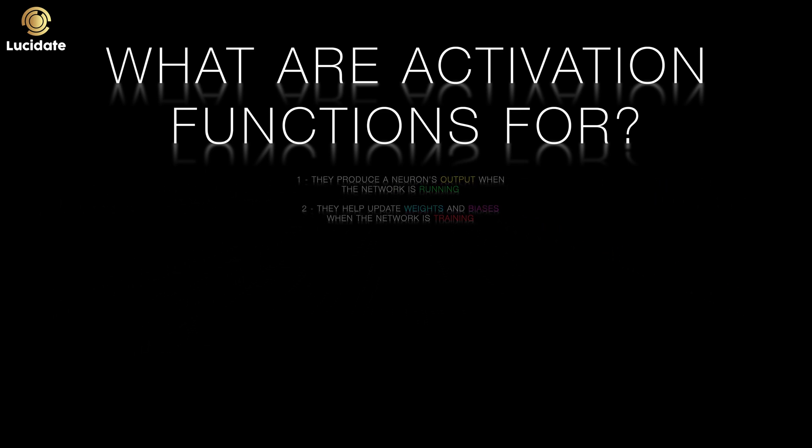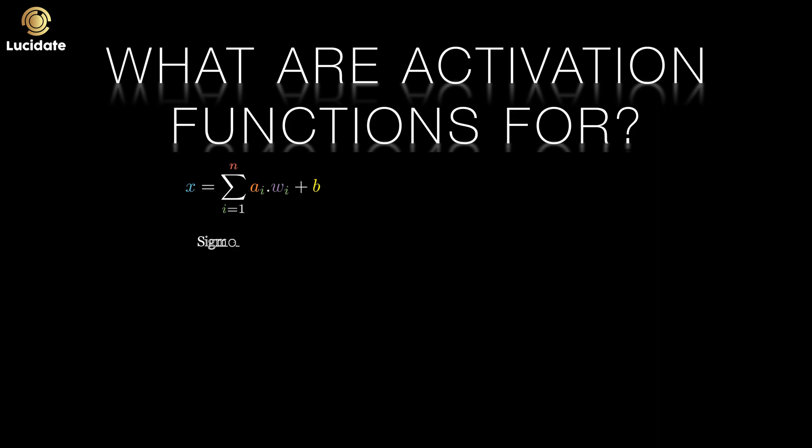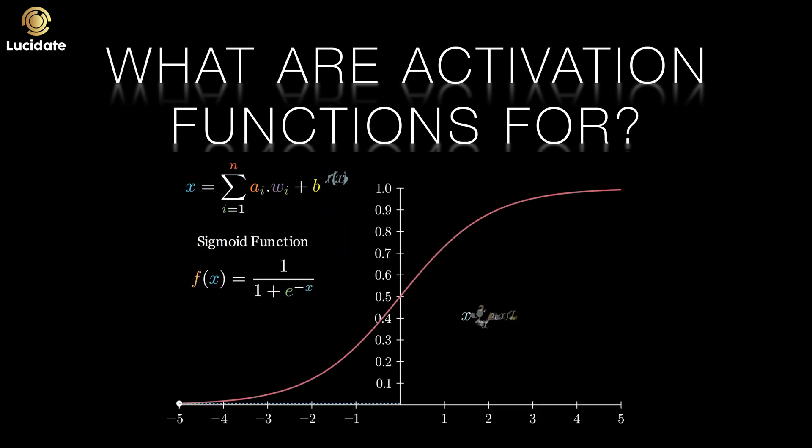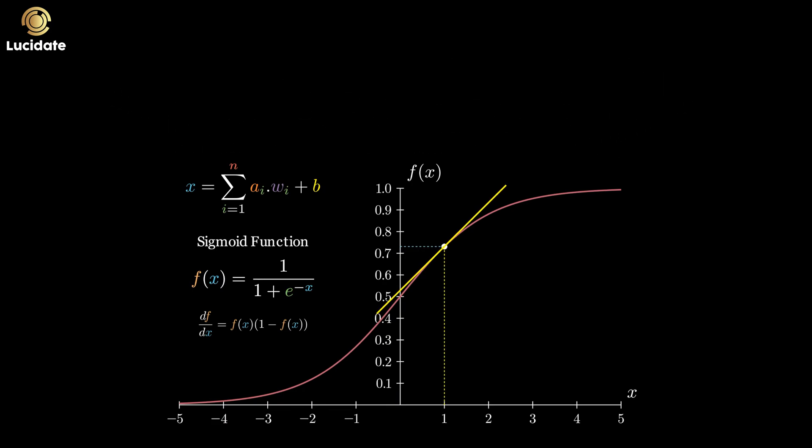When a network is trained, adjustments are made to the weights and biases of each neuron. The strength and direction of these nudges or adjustments depend on the activation function. Specifically, it depends upon the first derivative or slope of the activation function. Now let's not get ahead of ourselves and worry too much about training, adjustments to parameters and calculus just now. We will come to that later in this series.